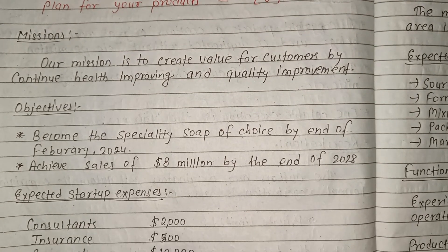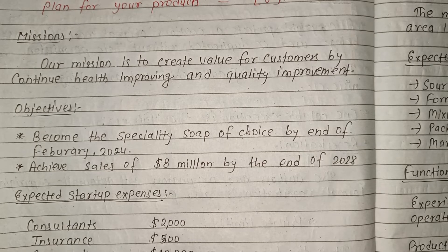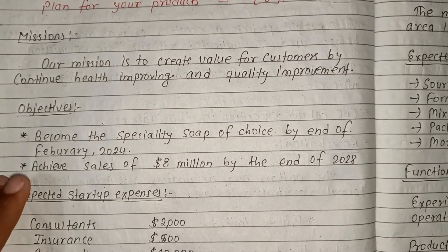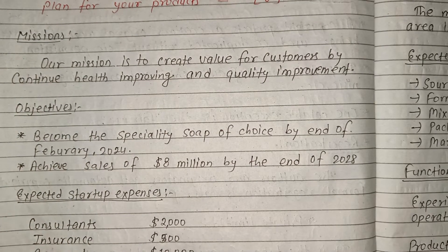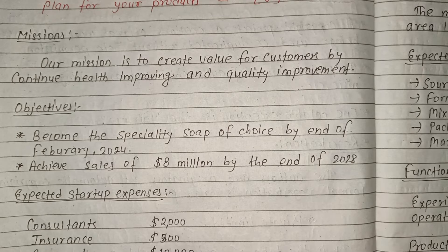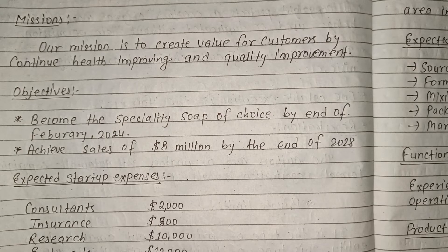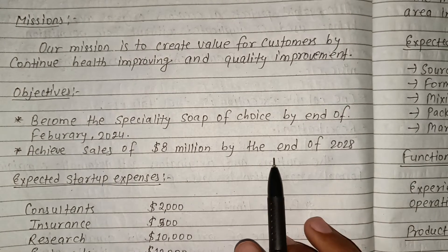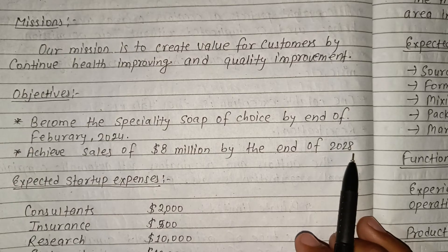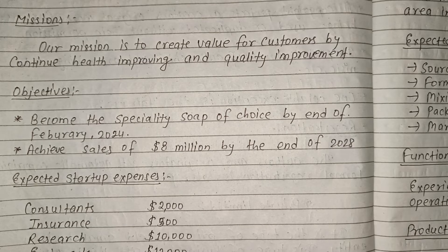Our objective will be to become the specialty soap shop of choice by end of February 2024, and December 2025. We need to achieve sales of $8 million by the end of 2020.